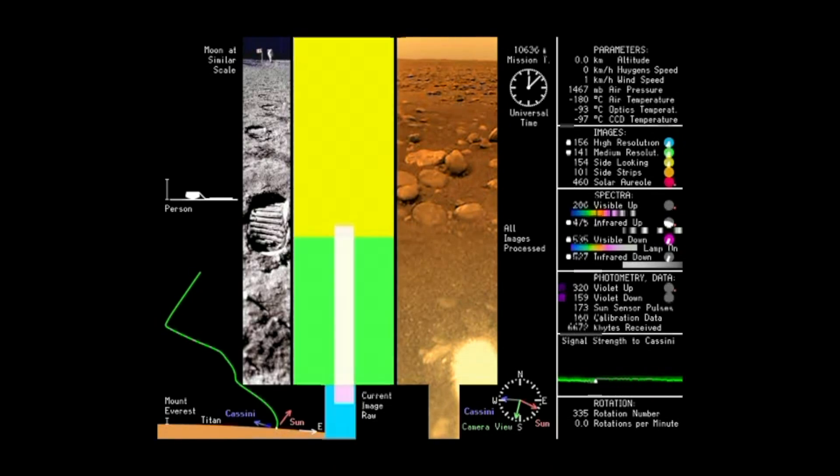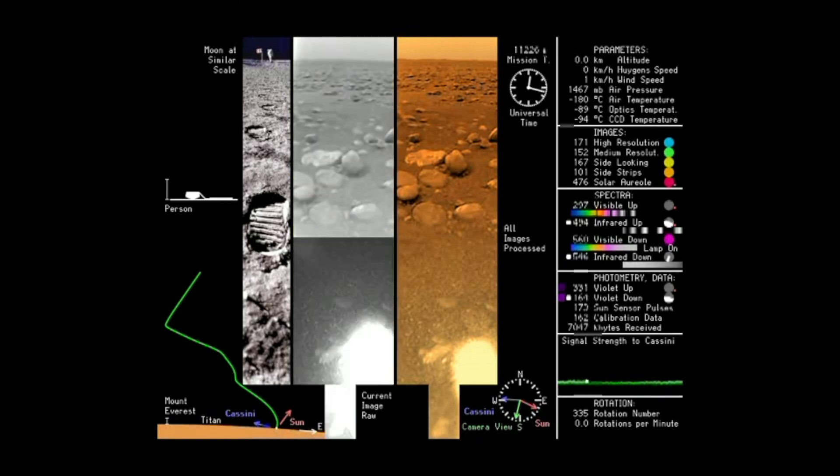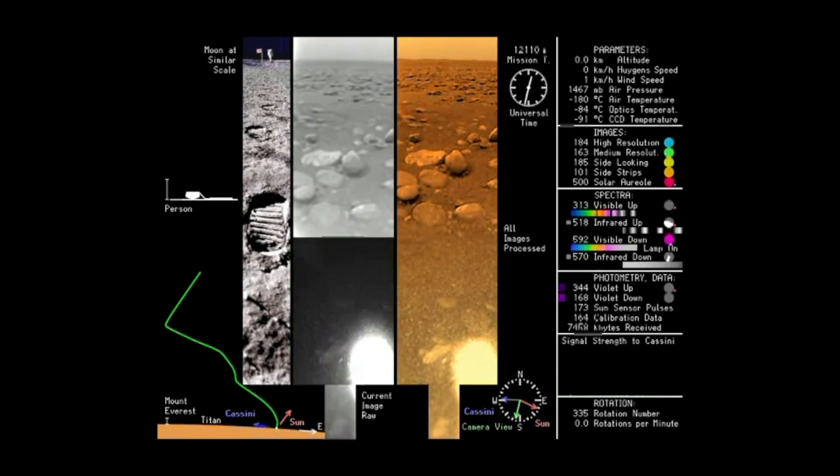But once that source of methane is gone from Titan, then the atmosphere could possibly collapse, because it's really the methane working like a greenhouse gas that's keeping everything warm enough to support an atmosphere of that size. So it's a very interesting question.